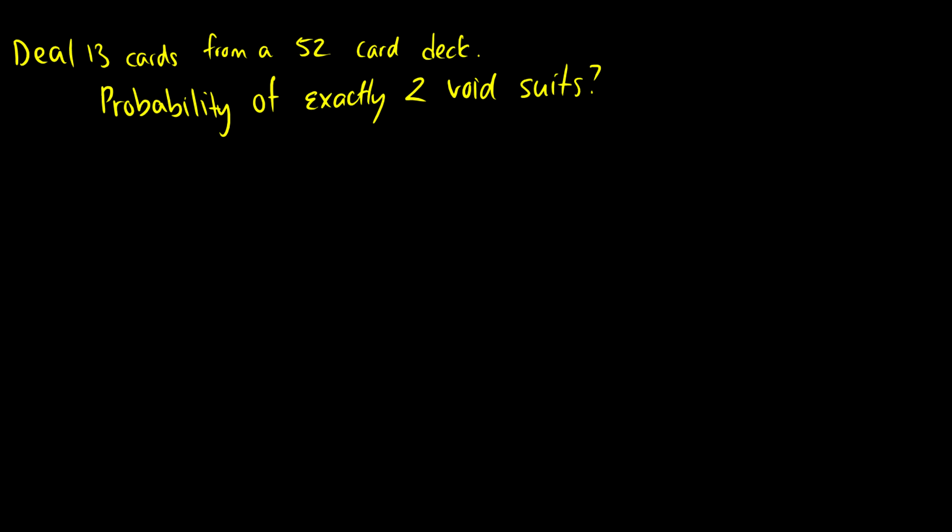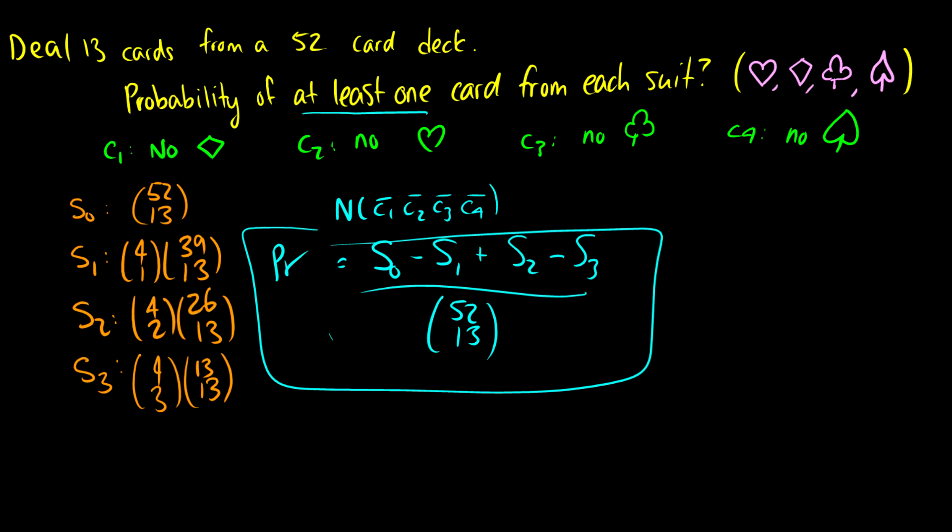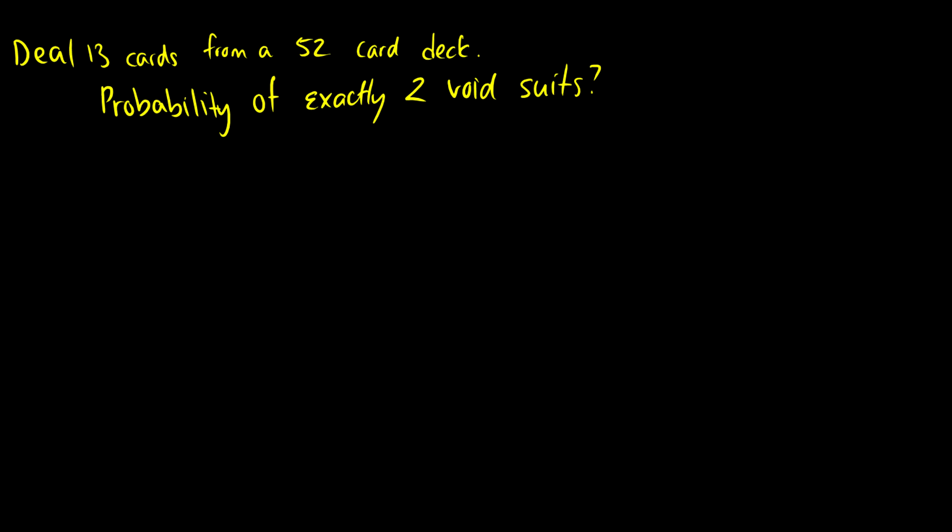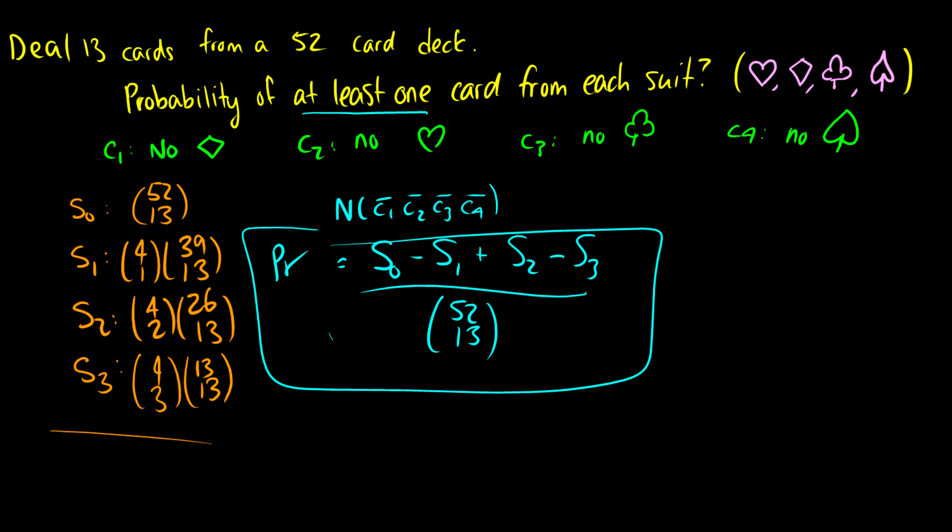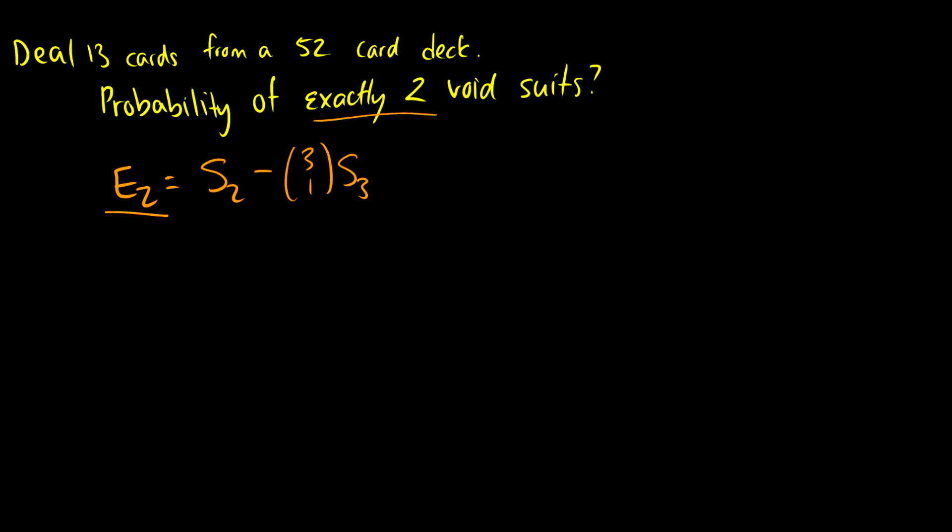Now, if we alter this a little bit, and we say, no, we want exactly two void suits. Well, we had our conditions before, where C1 is no diamond, C2 is no heart, C3 is no clubs, and C4 is no spades. So we can say, okay, we want exactly two void suits. Well, exactly two of those conditions are going to be met then. And that's going to be S2 minus 3 choose 1 S3. And we don't have an S4. So that's as far as we need to go. But because this is a probability, it's E2 over S0. So this is going to be S2 minus 3 choose 1 S3 over S0, because of course, this is the probability.